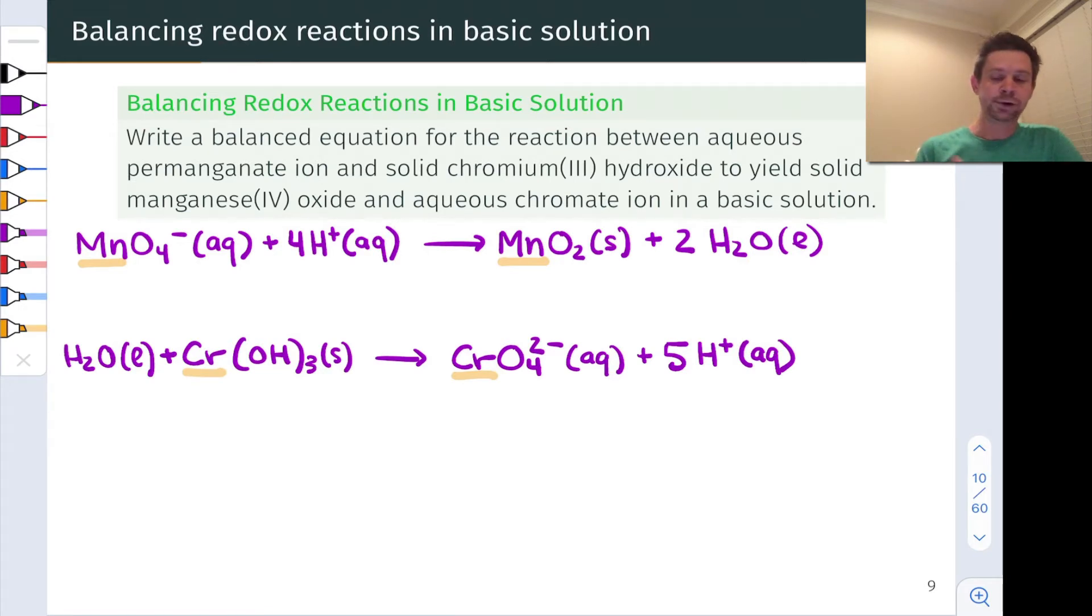All right, there is still a problem here, which is that charge is not balanced. For example, in the top case, we've got a net charge of plus three on the left-hand side, but a neutral charge on the right-hand side. And remember, we balance charge by adding electrons either to the reactant or the product side. So in the case of the manganese half reaction, we're going to need to add three negatively charged electrons to that half reaction to ensure that both sides have a net charge of zero.